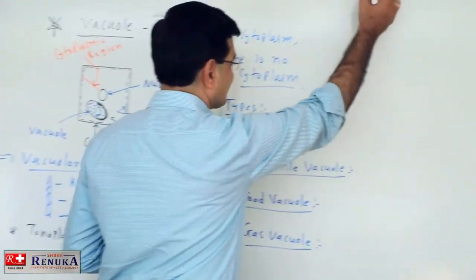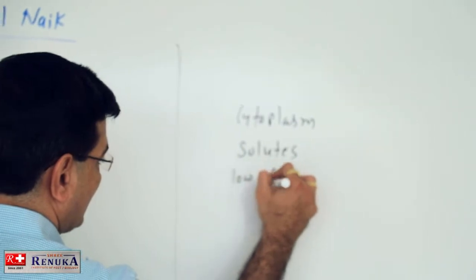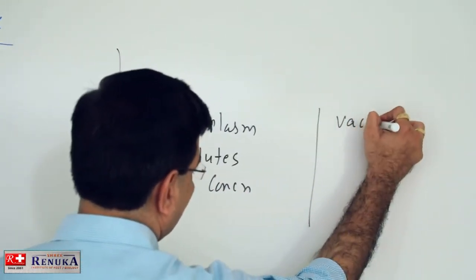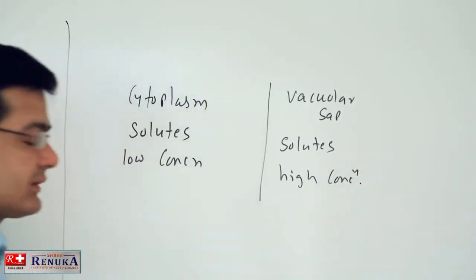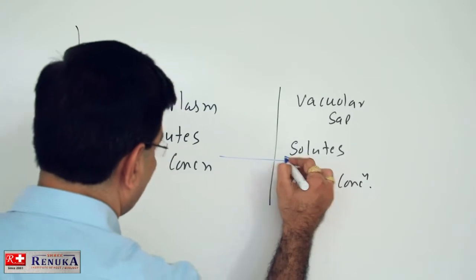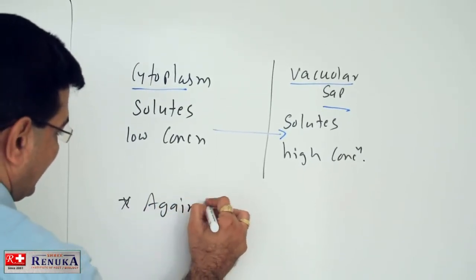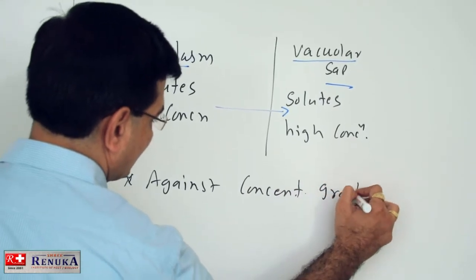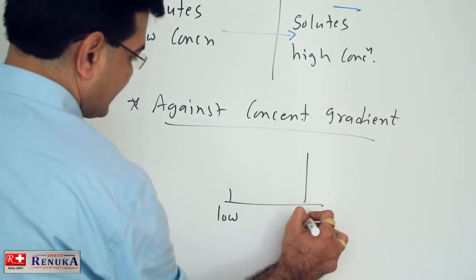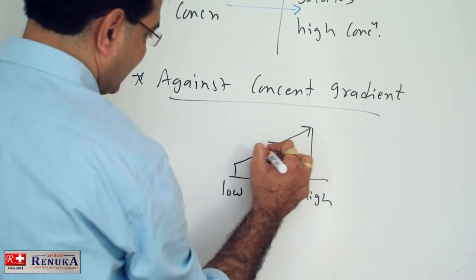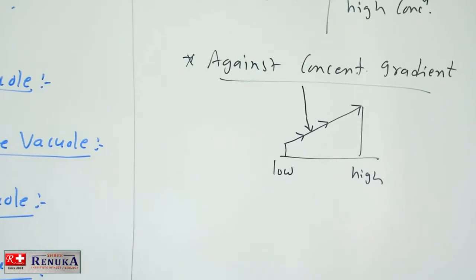Remember that in the cytoplasm, solutes are present having low concentration compared to that of the vacuolar sap. The solutes here have high concentration. So the substances move from cytoplasm to the vacuolar sap, and this movement is against the concentration gradient, simply from low concentration to high concentration. The movement occurs against the concentration gradient. In this condition, the substances need to cross the tonoplast.